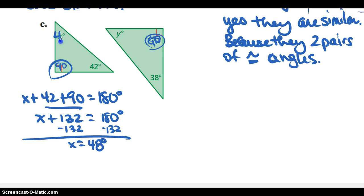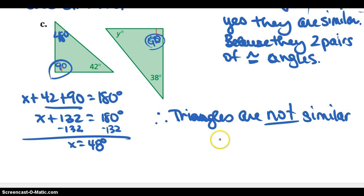Is that what I wanted? If I plug in 48 degrees, that's not going to work because I don't have two pairs, because 48 doesn't line up here. Therefore, the triangles are not similar because the angles are not congruent.